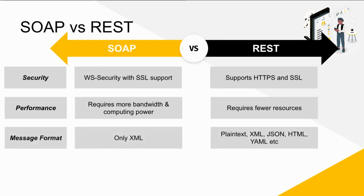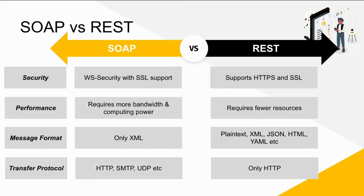In terms of messaging format, SOAP only supports XML, whereas REST supports plain text, XML, JSON, HTML, YAML, and more. In terms of transfer protocol, SOAP supports HTTP, SMTP, UDP, etc., whereas REST only supports HTTP. Regarding security, SOAP supports WS-Security with SSL support and has built-in compliance, whereas REST supports HTTPS and SSL. So SOAP is more secure by design, but REST APIs can be made more secure depending on the implementation and architecture.